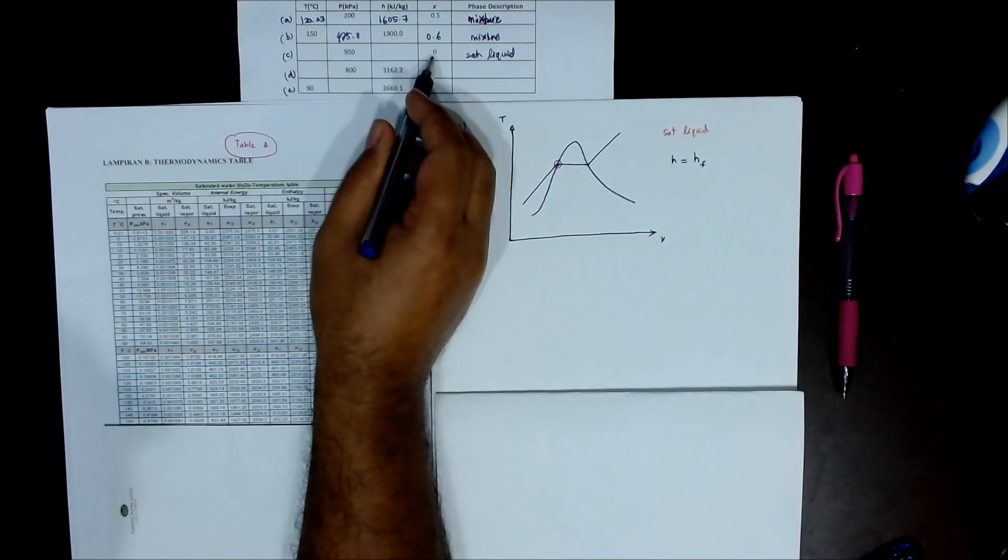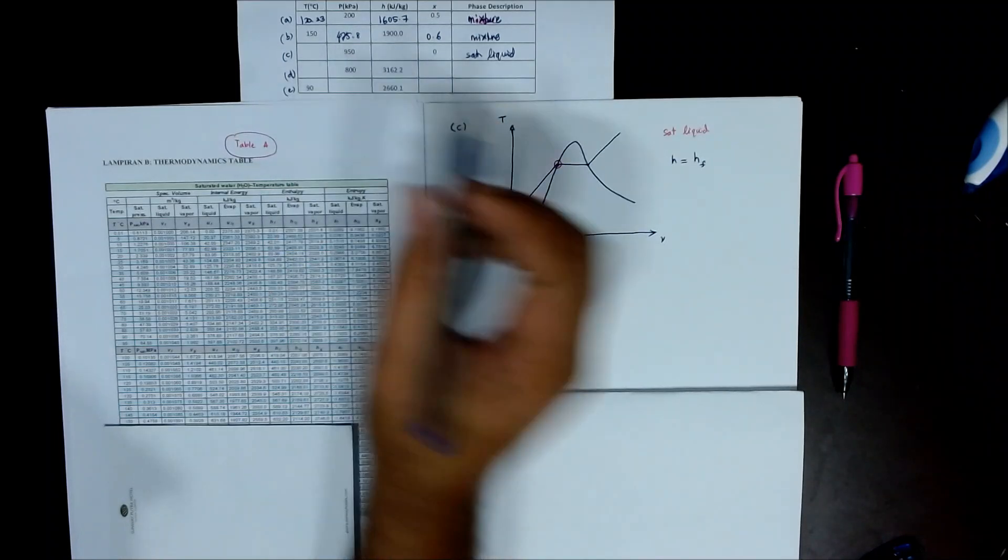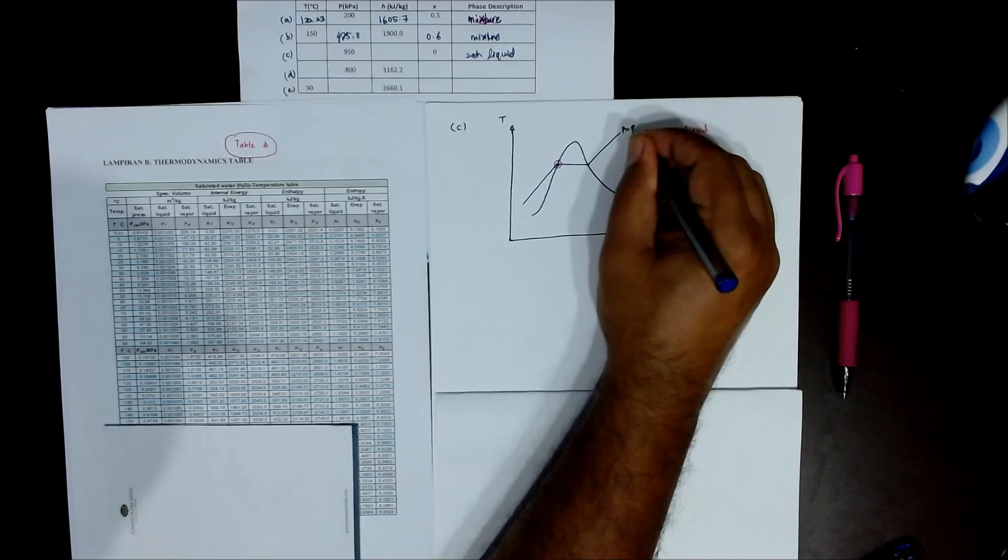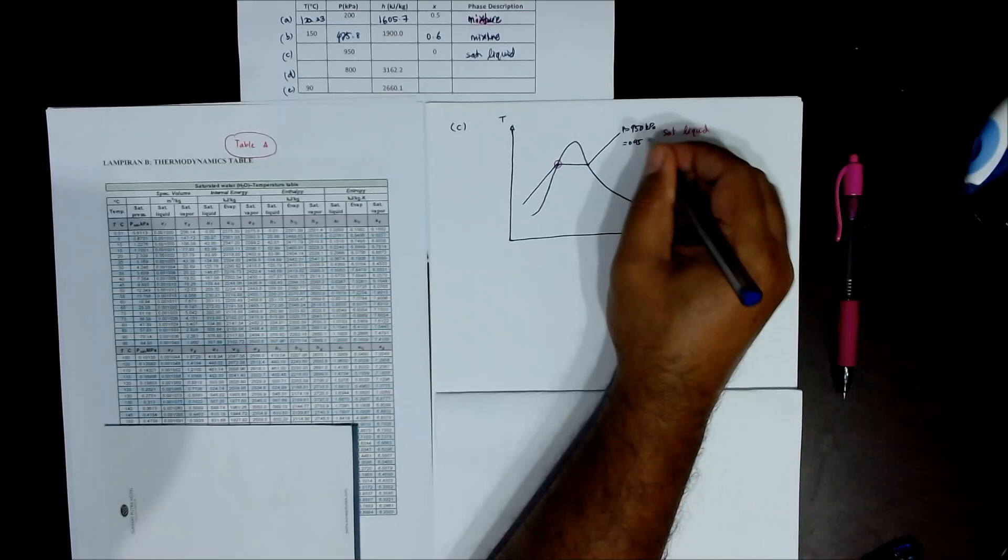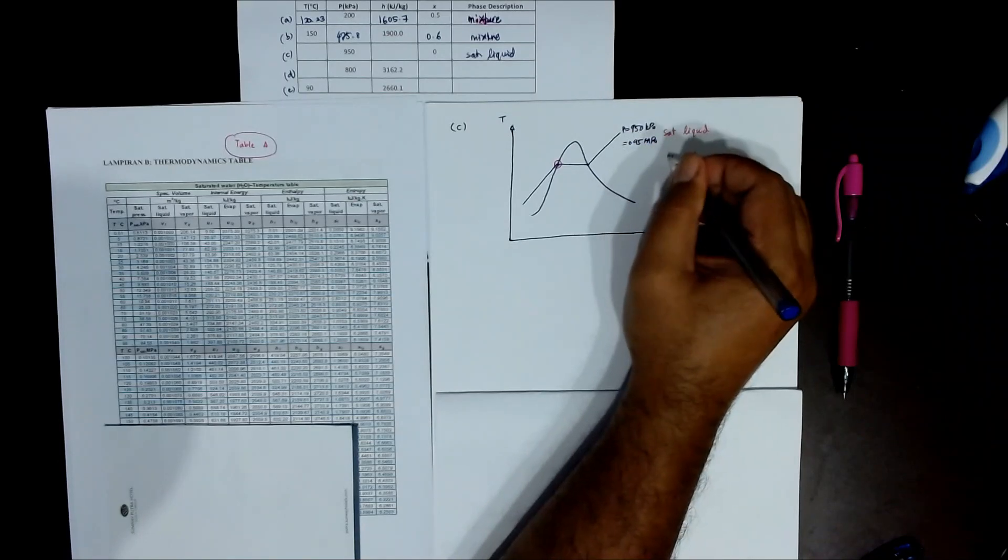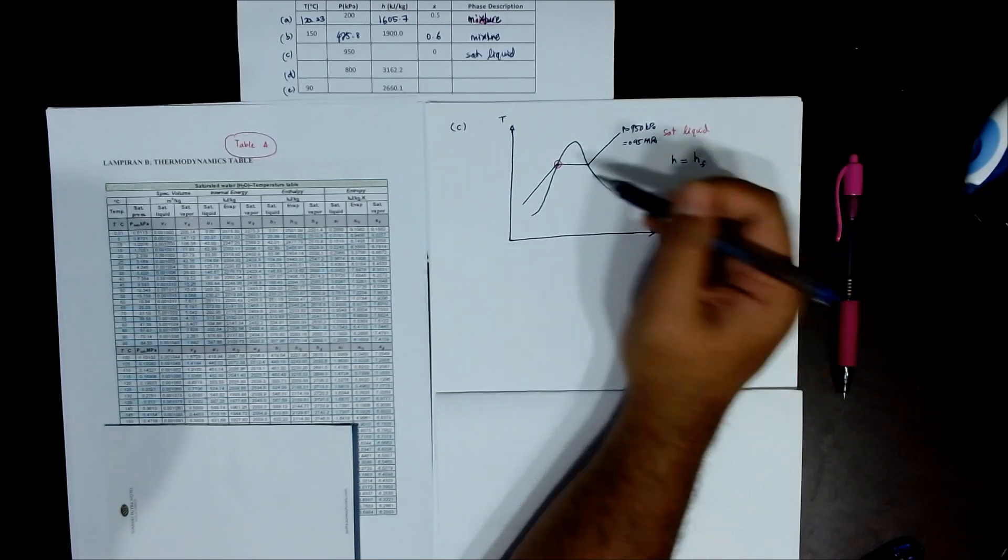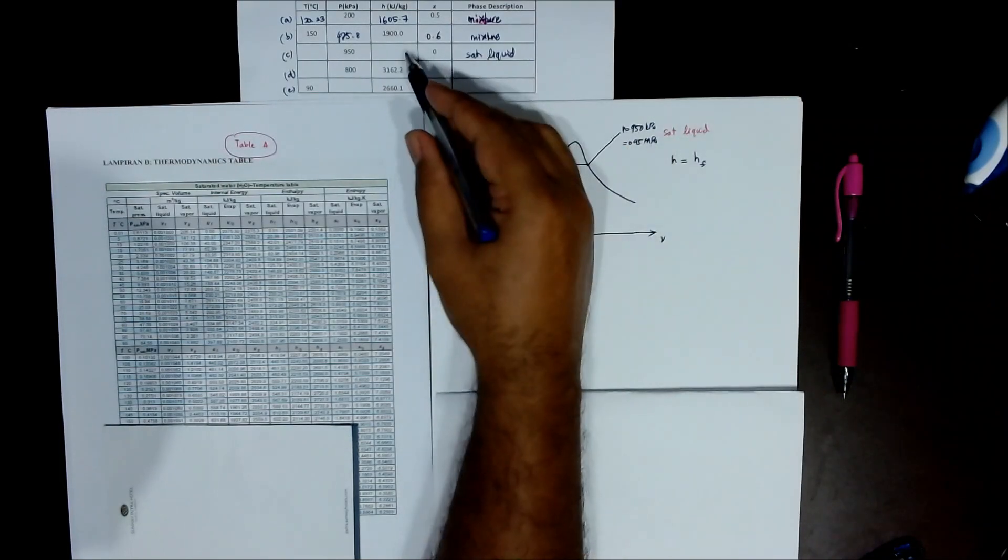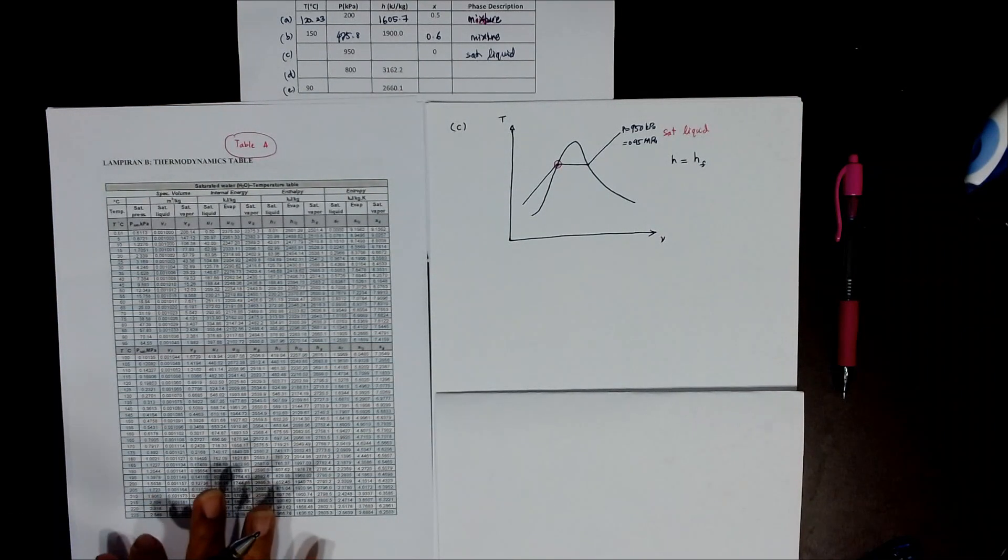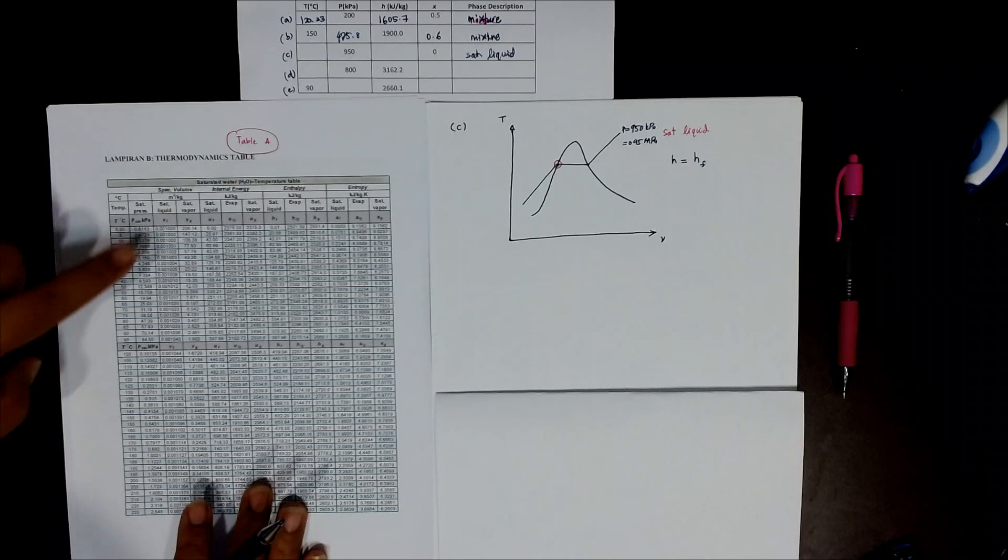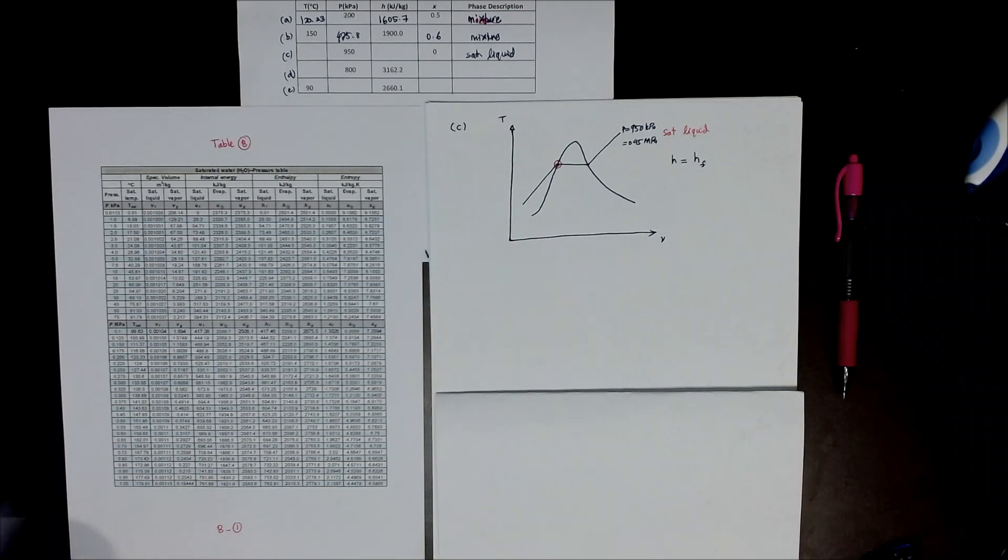X equals 0, but P at 950 kilopascal. P is 950 kilopascal, or equivalent to 0.95. Because when they give you 0, it's saturated liquid. We can write HF from the table. At 0.95, now we have to look into table B. We start with pressure, 0.95, so it's here.